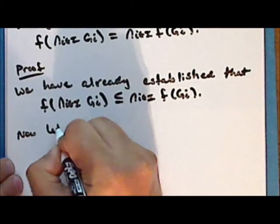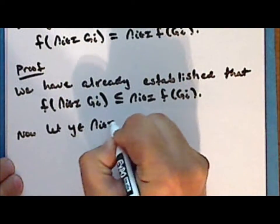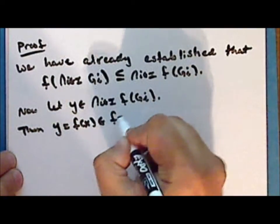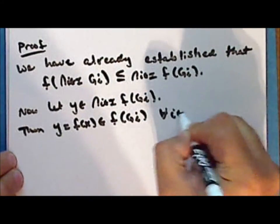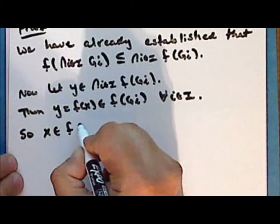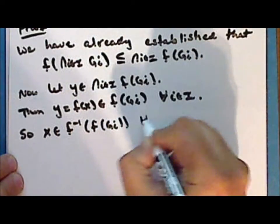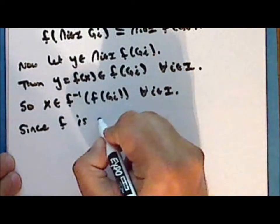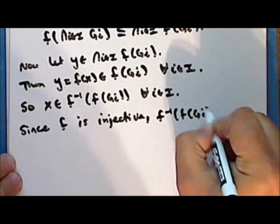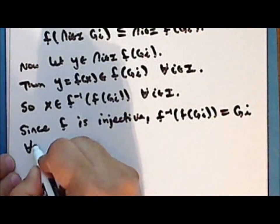Now let y be a point in the intersection of the direct images of the sets G sub i. Then the point y, which is f of x, is in the direct image of the set G sub i for every index i. And so the point x is in the inverse image of the direct image of the set G sub i for every index i. Since the function f is injective, the inverse image of the direct image of the set G sub i is equal to the set G sub i for every index i.